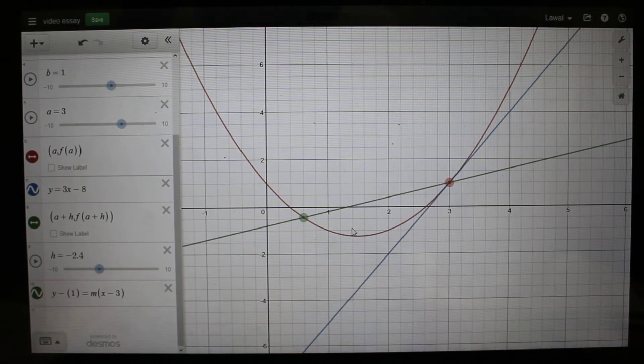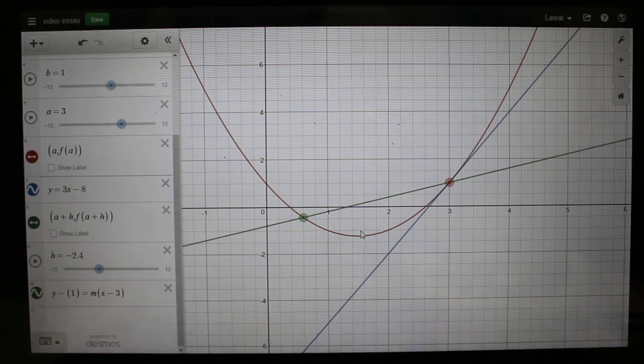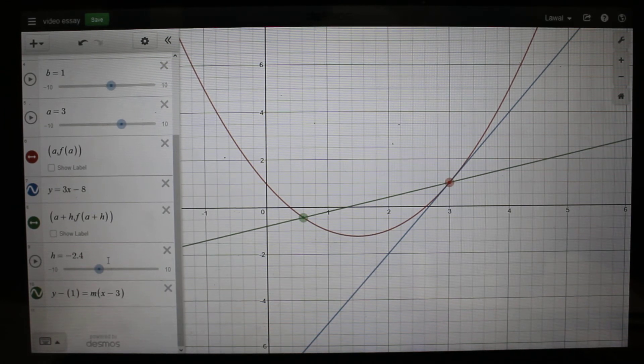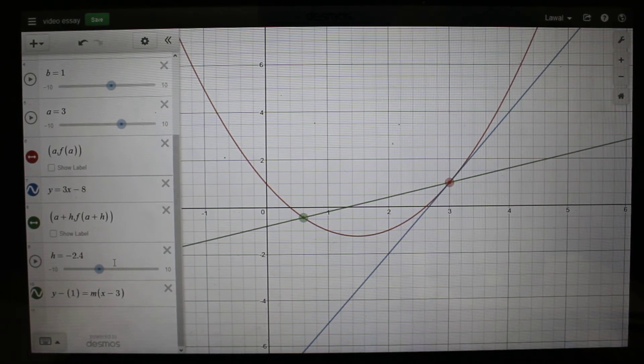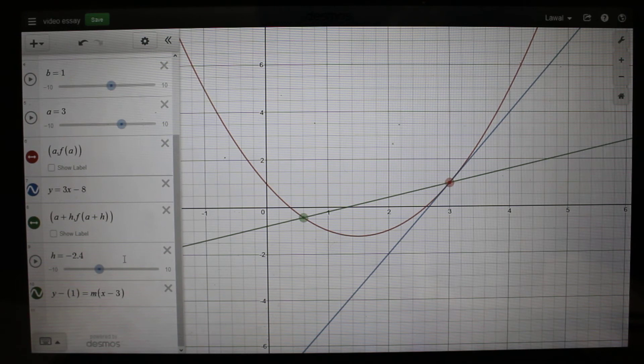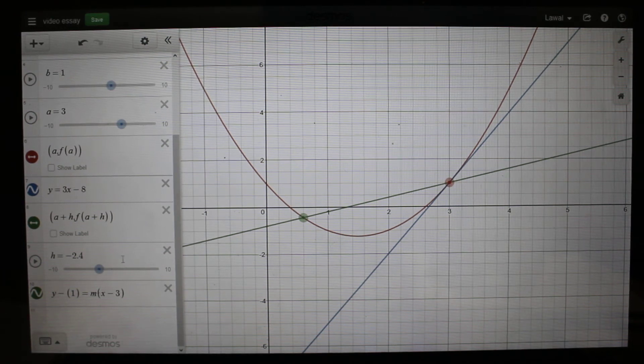Using technology is a very good way of viewing such changes because with technology we can view such instantaneous rate of change and we can monitor how the graph is changing instantaneously due to the point at h.